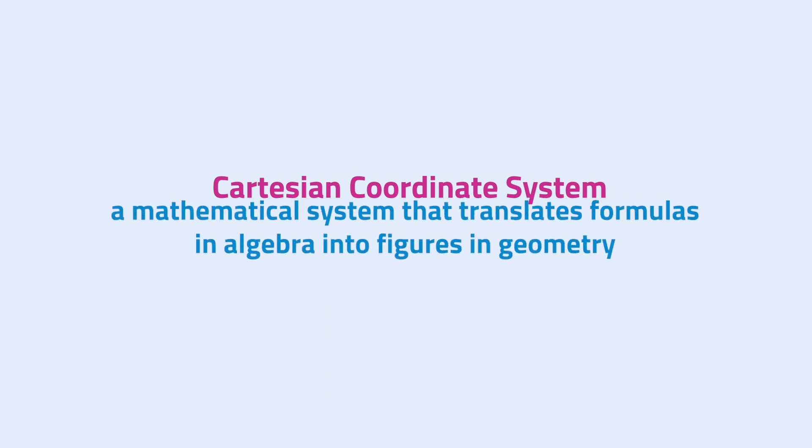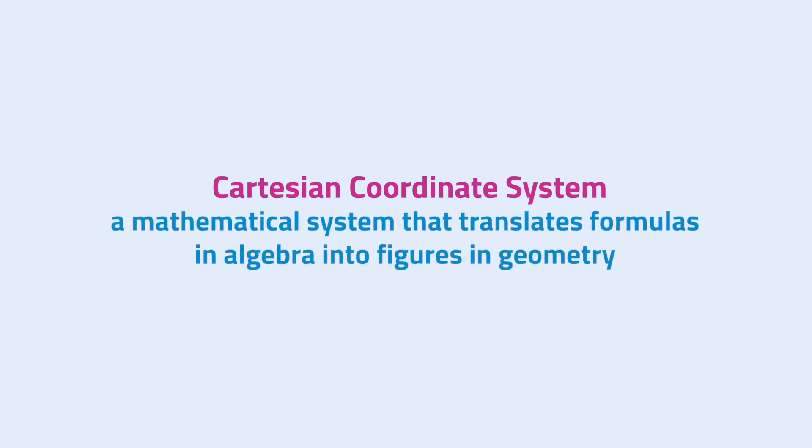The Cartesian Coordinate System is a mathematical system that translates formulas in algebra into figures in geometry.